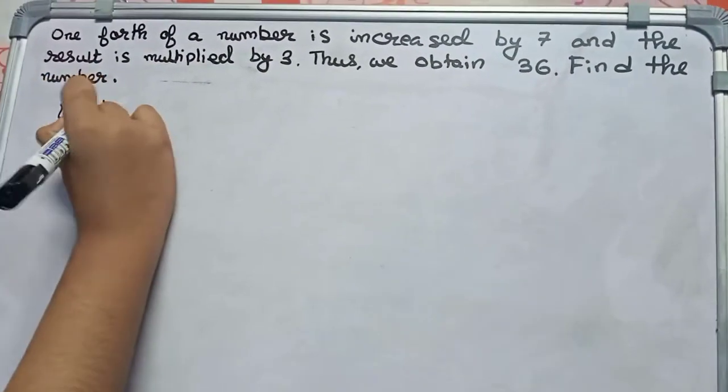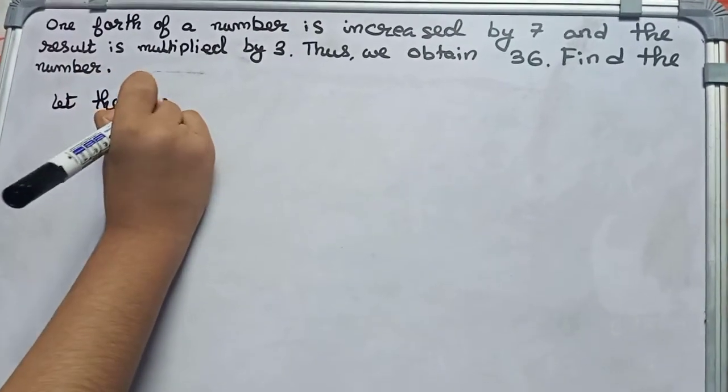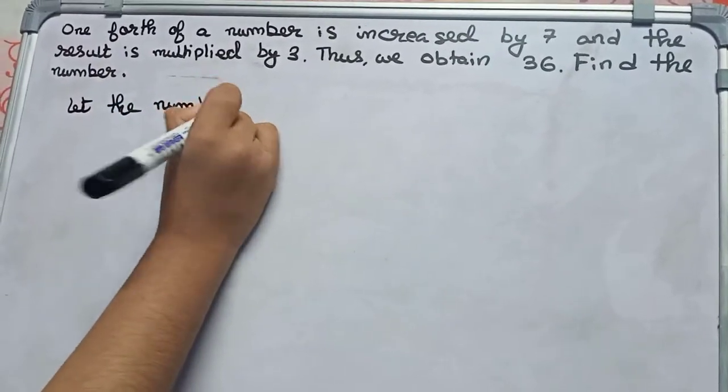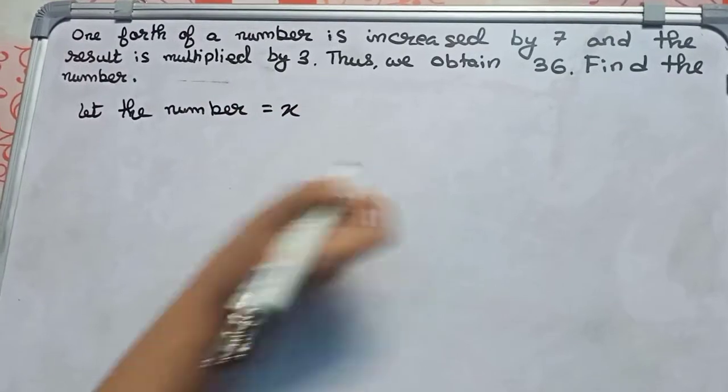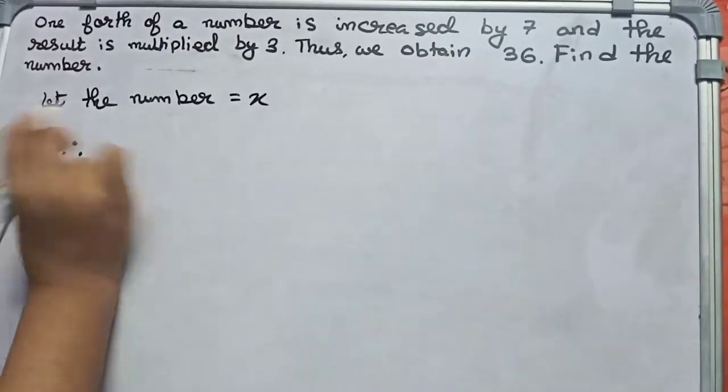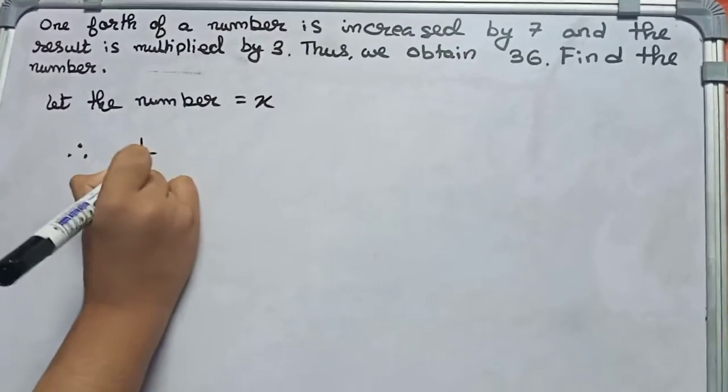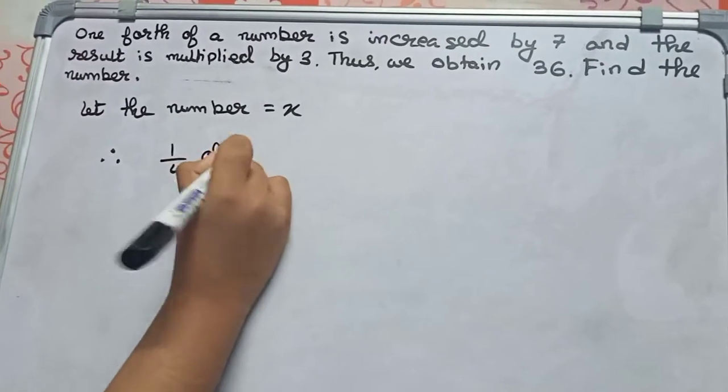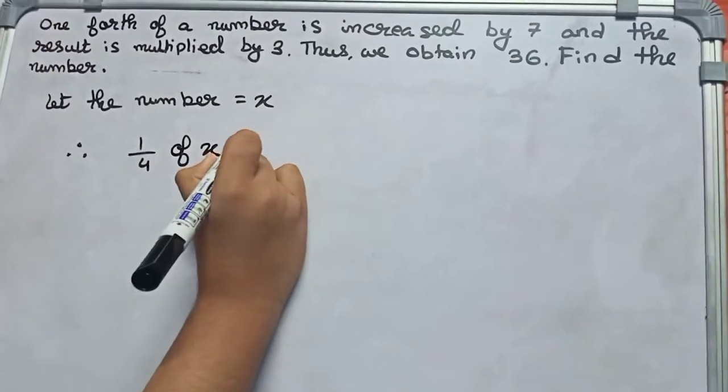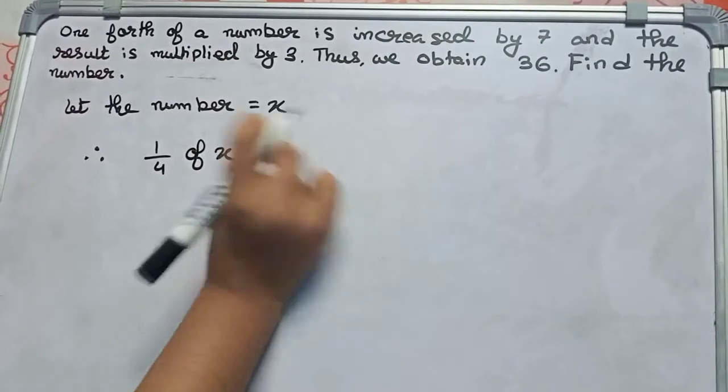So let's start. First, we write let the number equals x. Therefore, I form our equation. It is given one-fourth of a number, that means 1/4 of x, is increased by 7.